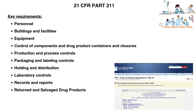Section 2, Buildings and Facilities, details the design and construction, storage, environmental condition controls, processing, quarantine, and other designated areas for different types of operations in the manufacturing unit, including sewage, plumbing, lighting, and ventilation. Section 3, Equipment, details equipment construction, equipment cleaning and maintenance, and other requirements related to equipment.